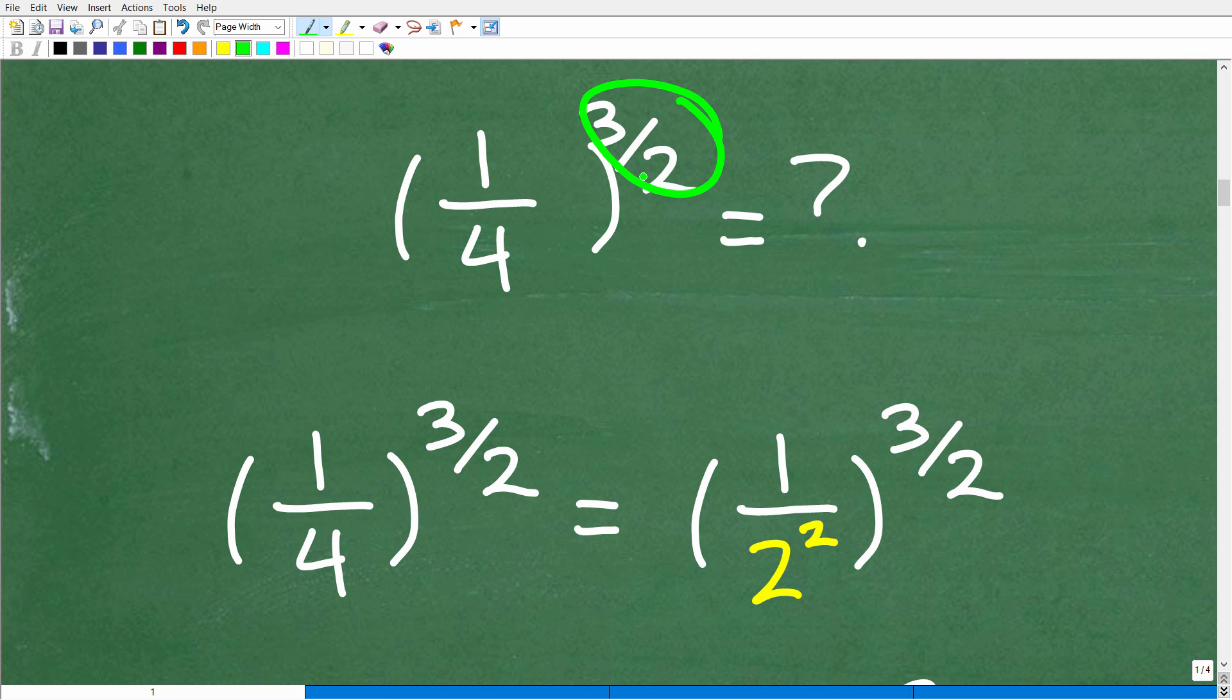We have one-fourth to the three-halves power. Okay, so we have an exponent to this power right here. So how can we work with this? Well, an excellent strategy is to kind of write this fraction in such a way that we have a power in and of itself. So we're going to take one-fourth and we're going to write it as a power. So how can we do that? Well, some of you might recognize 4 as 2 squared. So I can literally write 1 fourth as 1 over 2 squared. So let's go ahead and do that. So instead of one-fourth, we'll write that as 1 over 2 squared.